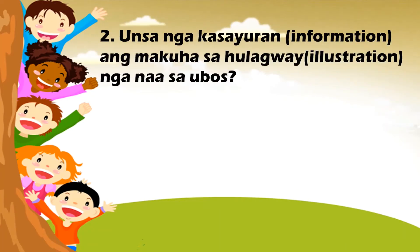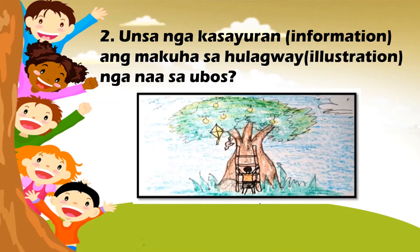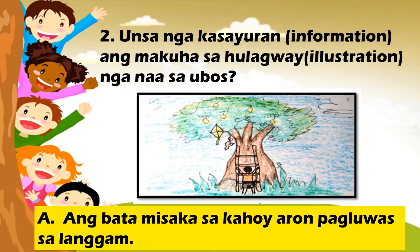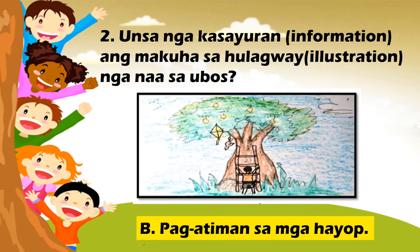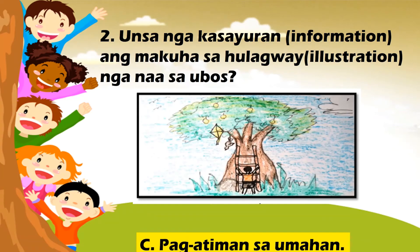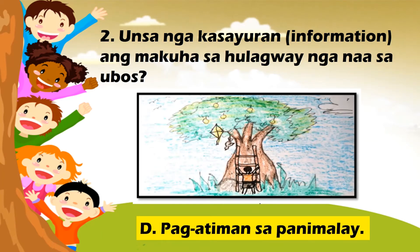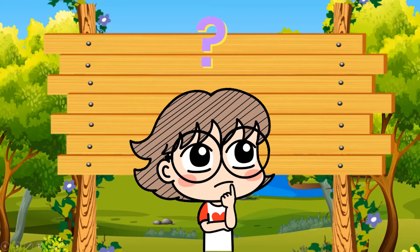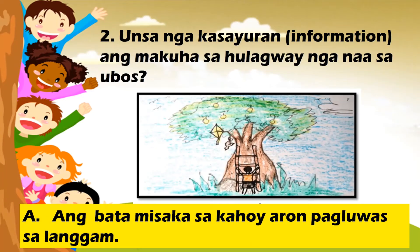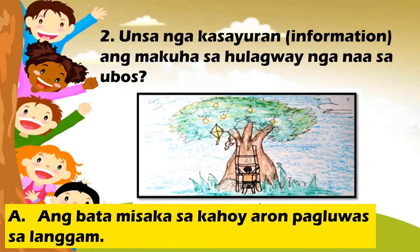Unsa nga kasayuran o information ang makuha sa hulagway sa ubos? A. Ang mga bata misaka sa kahoy arun pagluwas sa langgam. B. Pag-atiman sa mga hayop. C. Pag-atiman sa umahan. O D. Pag-atiman sa panimalay. Letrang A. Ang bata misaka sa kahoy arun pagluwas sa langgam.